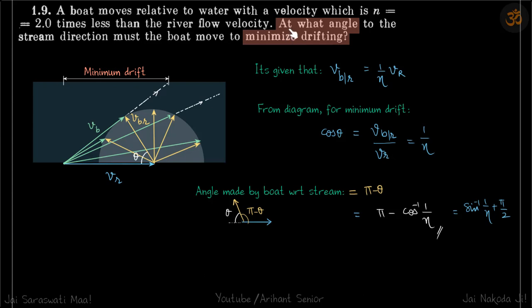A boat should travel at what angle to minimize drifting? This is the question. We have this river and this blue arrow represents the velocity of the river. Let's say the yellow arrow represents the velocity of the boat.